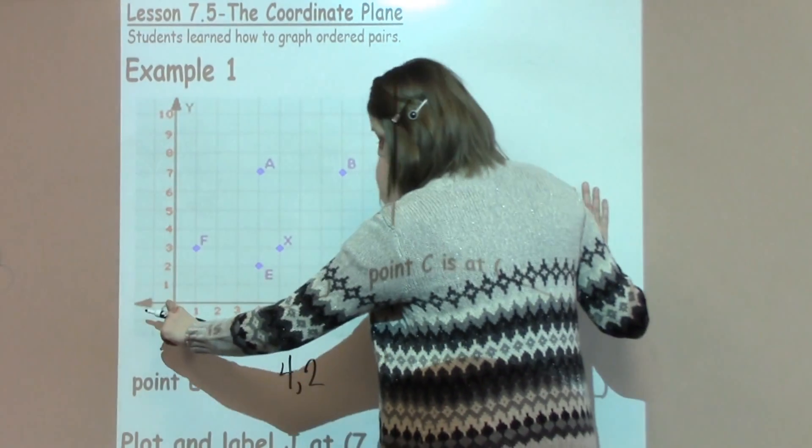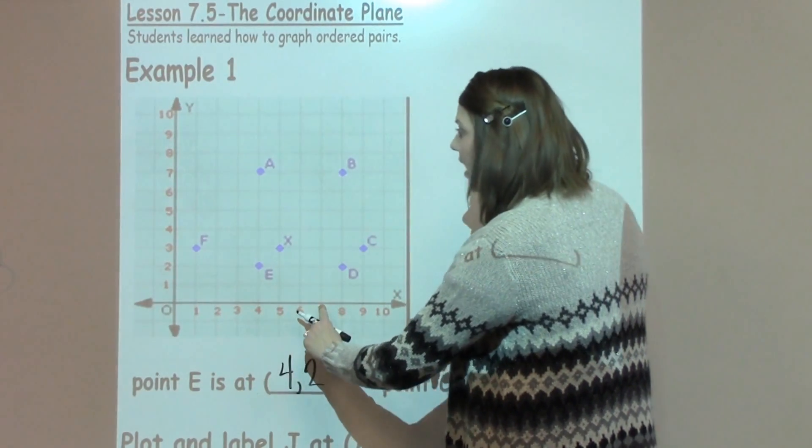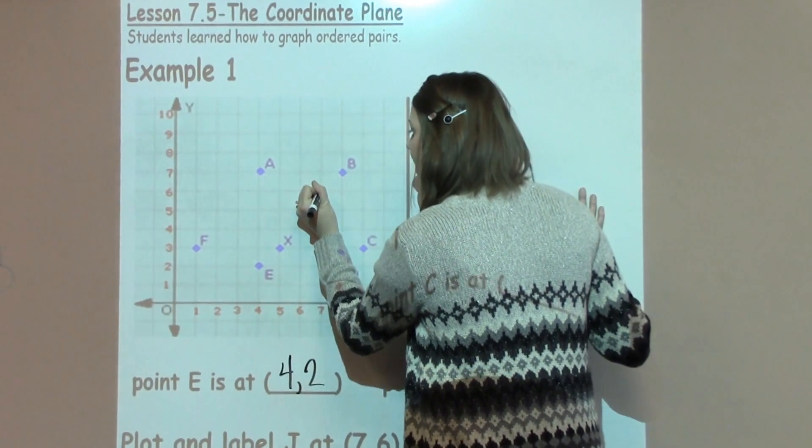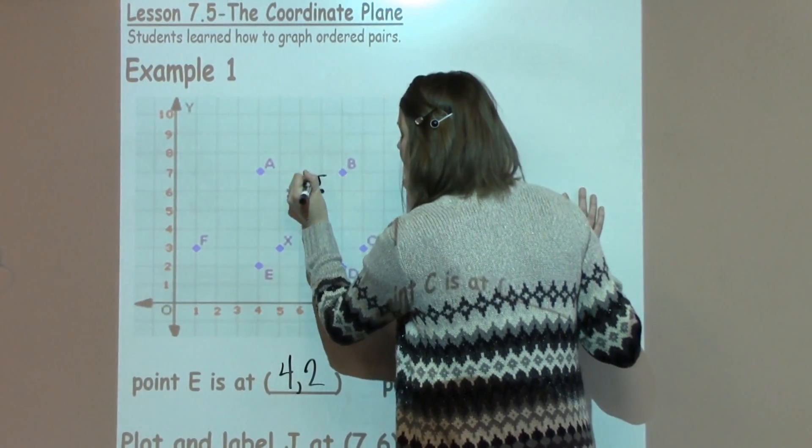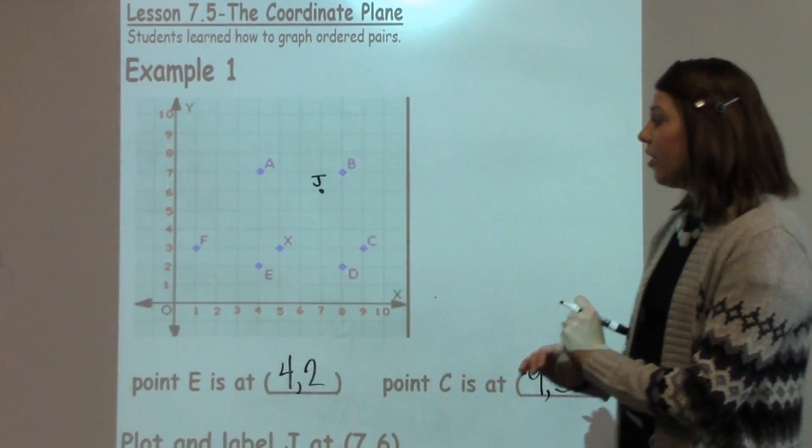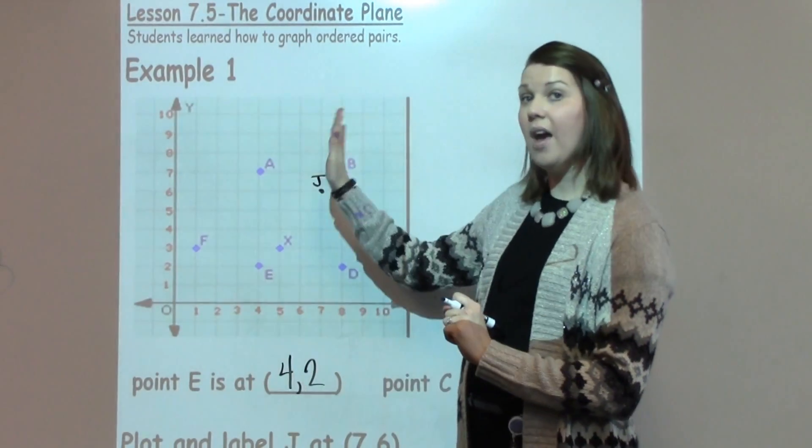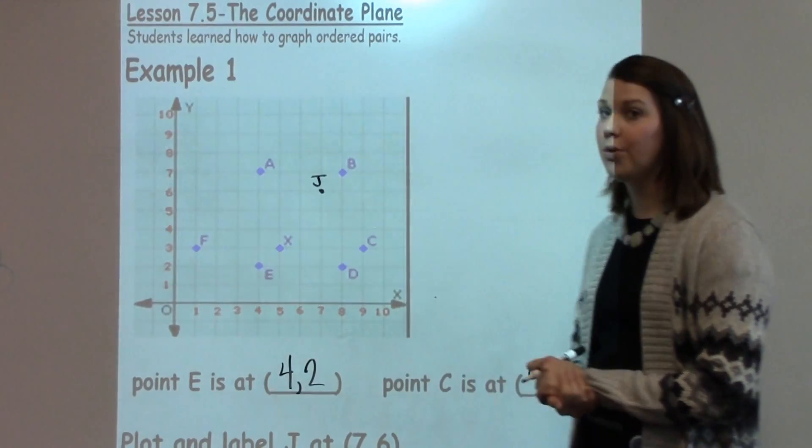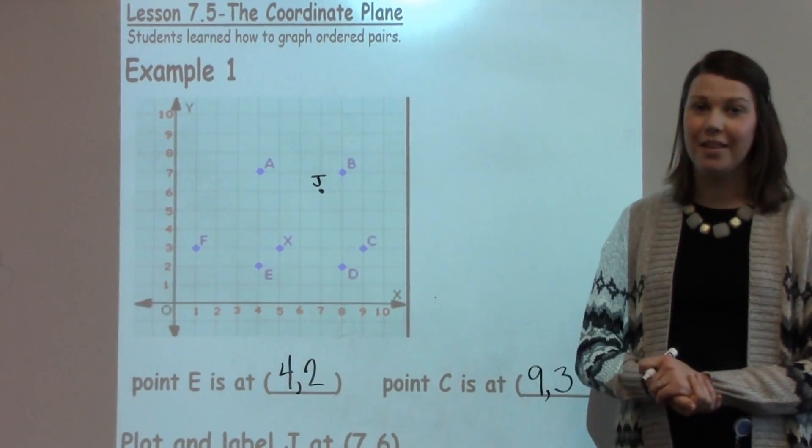So again, I'm going to go over 7 and I need to go up 6. I'm going to put a dot there and write J. Really remembering with ordered pairs, it's important to go x and then y or over then up to graph things appropriately on a coordinate plane.